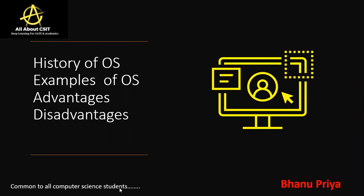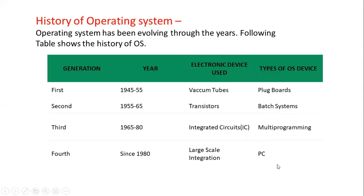First, we will see the history of the operating system. The history of operating system has been evolving through the years — first generation, second generation, and so on. In the first generation, from 1945 to 1955, the electronic device used was vacuum tubes. The type of operating system device used was plug boards. In the second generation, from 1955 to 1965, the electronic devices used were transistors, and the type of operating system device was batch systems.